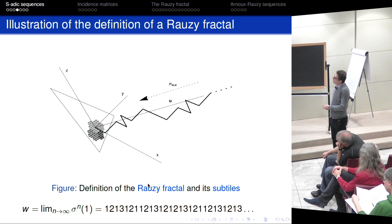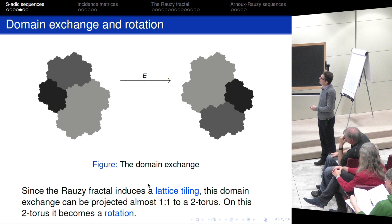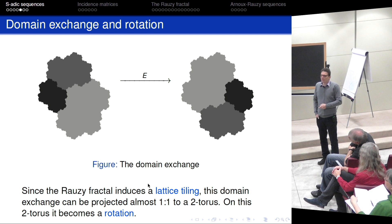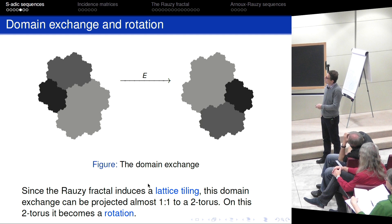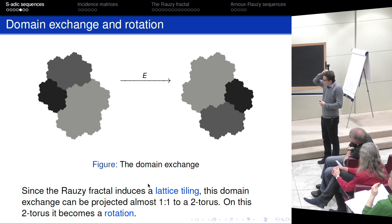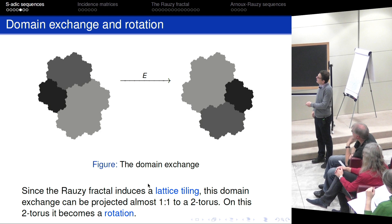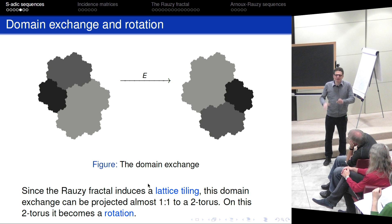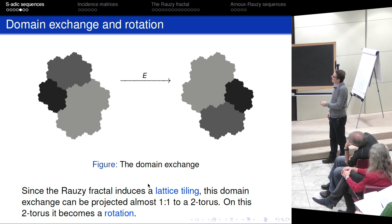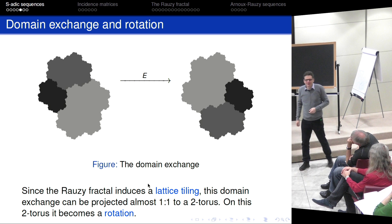Rauzy's idea was to see the rotation on this Rauzy fractal. He proved several nice properties: the subtiles permit a domain exchange — shifting those three subtiles (corresponding to letters one, two, and three) gives back the same Rauzy fractal. Using this, he showed the original dynamical system is measurably conjugate to this domain exchange. This induces a lattice tiling of the plane. If you factor out the lattice, the fractal wraps nicely around the torus, and the domain exchange becomes a rotation. This was Rauzy's very nice idea.